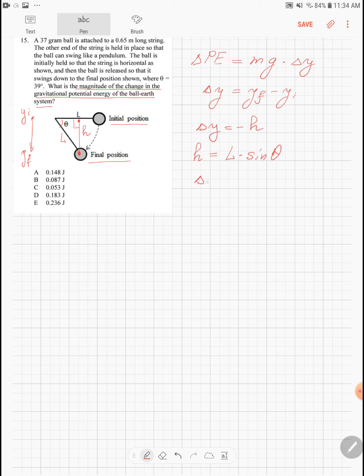So delta y is minus l times sine of the angle theta. Now we can substitute it back into our equation for the change of the potential energy. It will be minus mg times l times sine of theta. Now we can substitute the numbers.